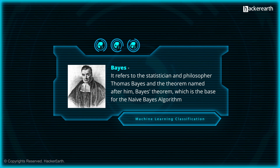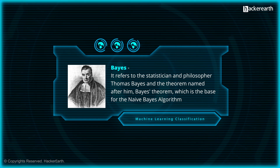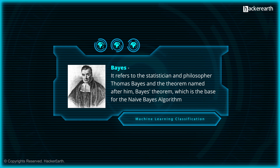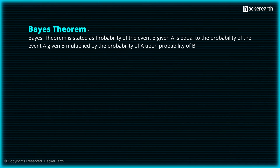That is why it is called 'naive.' As for the 'Bayes' part, it refers to the statistician and philosopher Thomas Bayes and the theorem named after him — Bayes' theorem — which is the base for the naive Bayes algorithm. The basis of the naive Bayes algorithm is Bayes' theorem, alternatively known as Bayes' rule or Bayes' law.